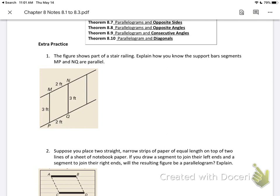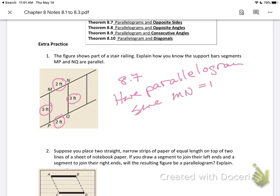Extra practice 1: The figure shows part of a stair railing. Explain how you know the support bar segments MP and NQ are parallel. If this equals this and this equals this, that's enough to tell me I have a parallelogram. Therefore, the pieces are parallel. That's theorem 8.7. I have a parallelogram since MN equals PQ and MP equals NQ.